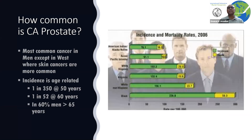Cancer of the prostate is one of the most common cancers in men. In fact, it is the most common cancer in most places, except in some western countries where skin cancers are a little more common than prostate cancer. As expected, the incidence is related to age and increases with age, while people more than 65 have a much greater chance of having the cancer.